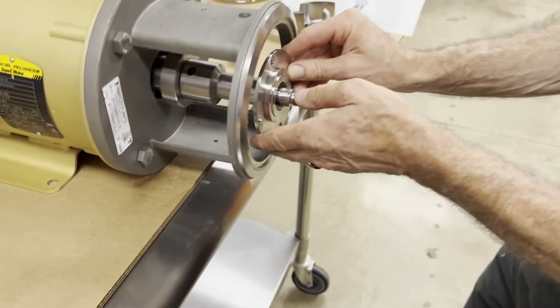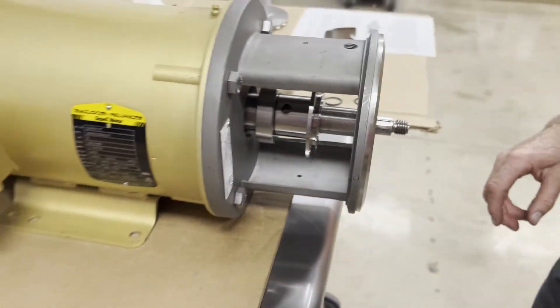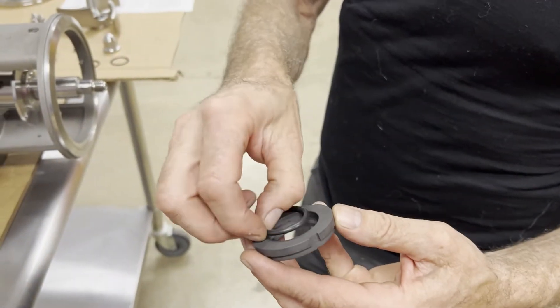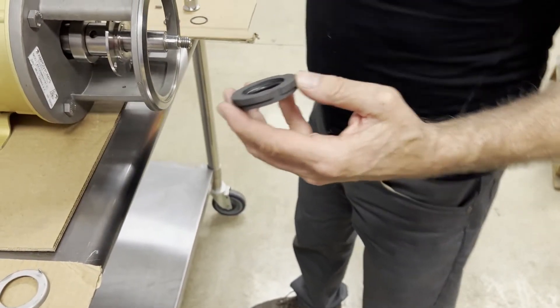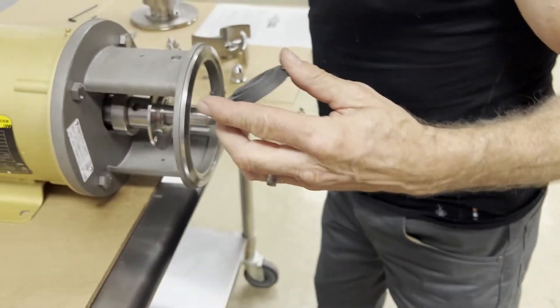This gets loaded onto the shaft. We have our rotating seal which has an O-ring in it. I'm going to lubricate that O-ring and make sure this seal face is clean.